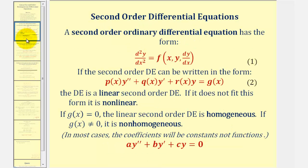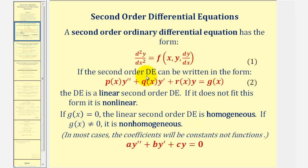In our first lesson, we discussed how a second-order ordinary differential equation fits this form here. And if we can write the equation in this form, then the second-order differential equation is also linear. And if g of x equals zero, the differential equation is also homogeneous. So the types of equations we'll be solving fit this form here, where the coefficients are not functions of x, but they're constants.